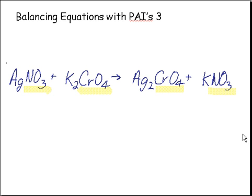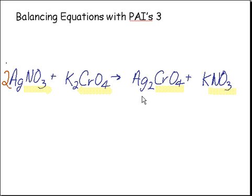If we focus on this compound right here, which is the more complex one, we notice we have two Ag's. On the left, we only have one Ag. So what we need to do is put a big two right there. That gives us two silvers. We also now have two NO3s, or two nitrates.